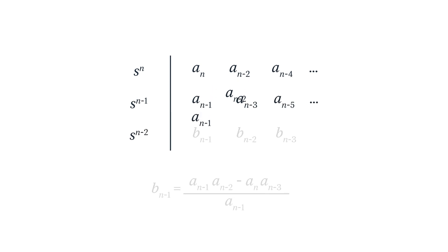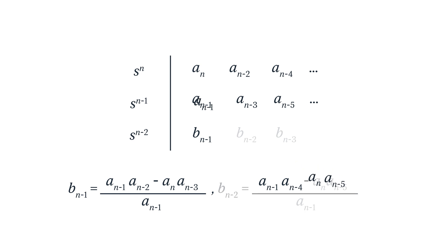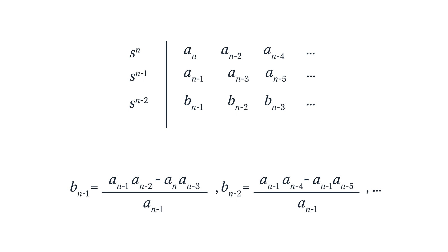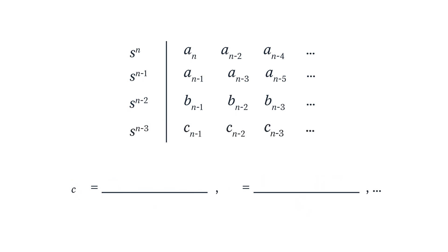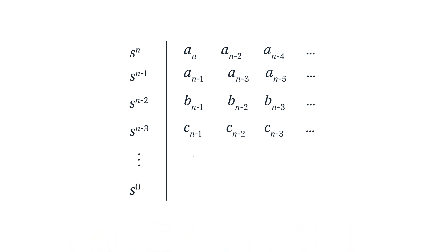Next we form the third row with the following procedure. We create a third row with a new set of coefficients that we call b, which are the result of some simple arithmetic using the original coefficients. While there is some math involved, it is very simple math, so do not let it intimidate you. For the next row we do it the same way. We will continue doing this until we get to s to the zero, finishing the complete Routh array.